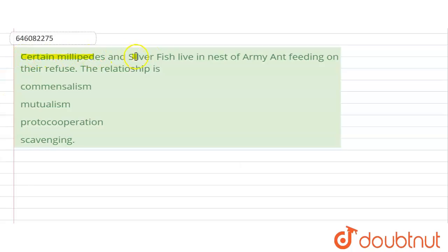Certain millipedes and silverfish live in the nest of the army ant, feeding on their refuse. This kind of relationship is called as?